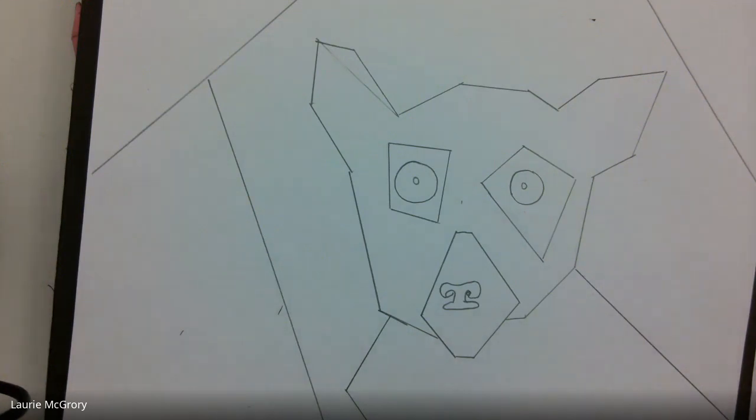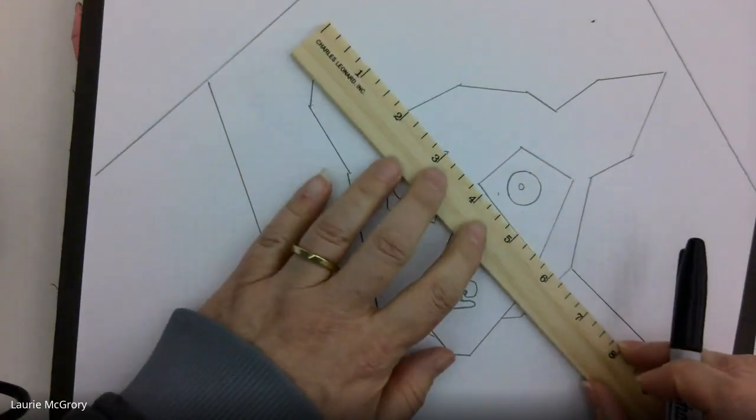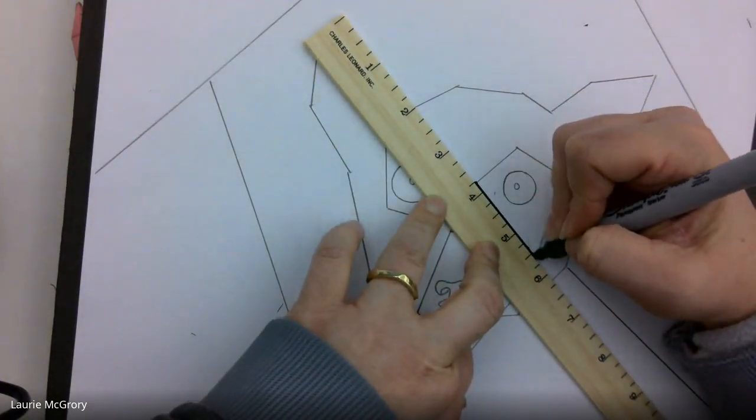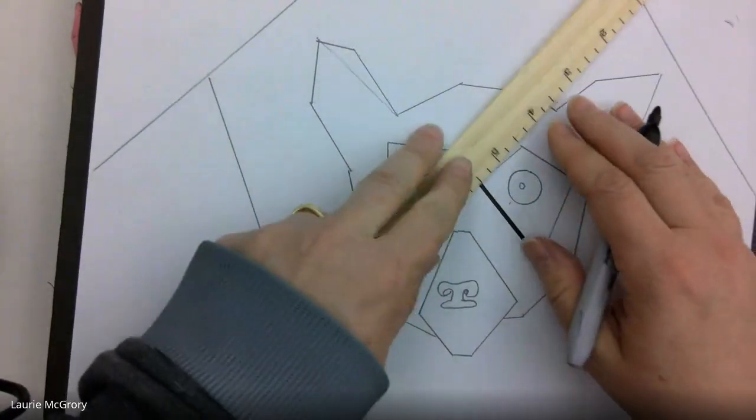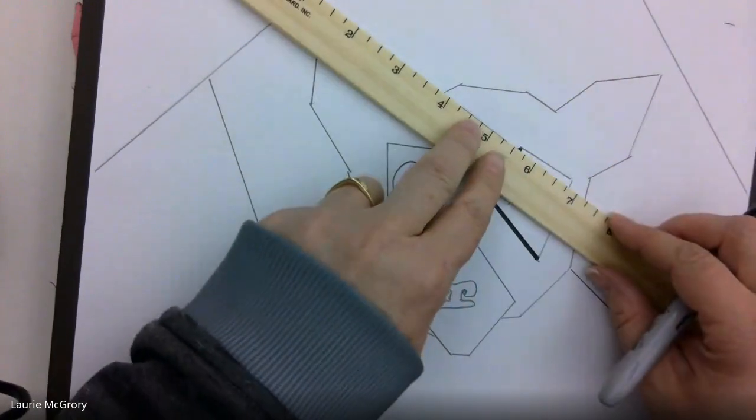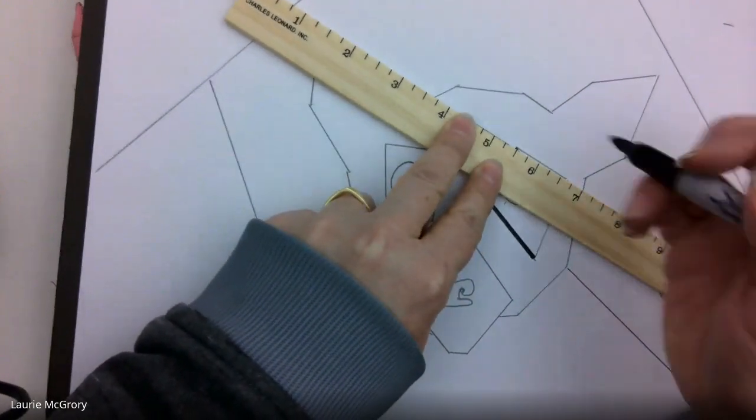My next steps is I want to start adding some color and start adding some line. So I'm going to start off, I really like that part. So I'm going to take my Sharpie, I'm going to take my ruler.